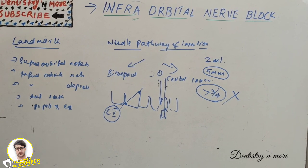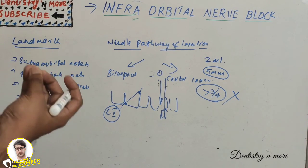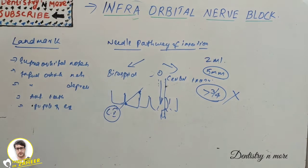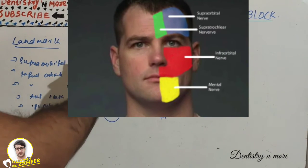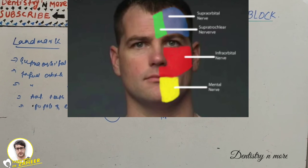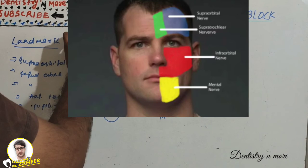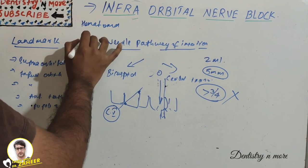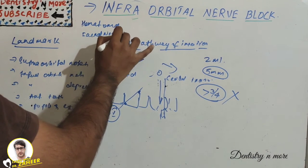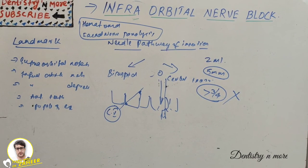The subjective symptoms reported by the patient include tingling and numbness of the upper lip, the side of the nose, and the inferior eyelid area. Objective symptoms include the patient not feeling pain during instrumentation. Complications associated with infraorbital nerve block include hematoma and facial nerve paralysis.